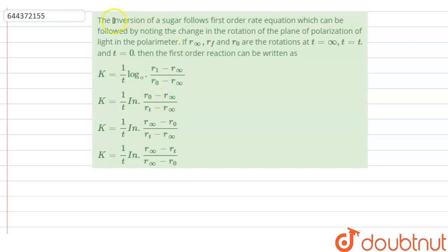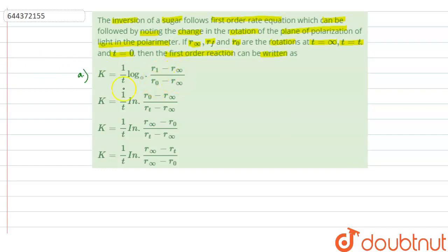Hello everyone, let us solve this question. The question says that the inversion of a sugar follows first order rate equation, which can be followed by noting the change in the rotation of the plane of polarization of light in the polarimeter. If r-infinity, r-t and r-0 are the rotations at t = infinity, t = t and t = 0 respectively, then the first order reaction can be written as: Option A: k = (1/t) log[(r-t minus r-infinity) / (r-0 minus r-infinity)]. Option B: k = (1/t) ln[(r-0 minus r-infinity) / (r-t minus r-infinity)]. Option C: k = (1/t) ln[(r-infinity minus r-0) / (r-t minus r-infinity)]. Option D: k = (1/t) ln[(r-infinity minus r-t) / (r-infinity minus r-0)].